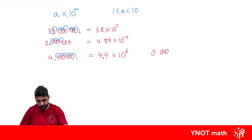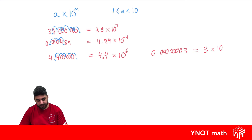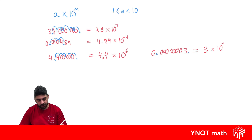What about 0.0000003? This is a small number so we know we need a negative power. We write our first non-zero digit, which is 3, then times 10 with a negative power. Currently our decimal is at the start and we want to move it to after the 3 — counting: 1, 2, 3, 4, 5, 6, 7, 8 — so we need a power of minus 8.